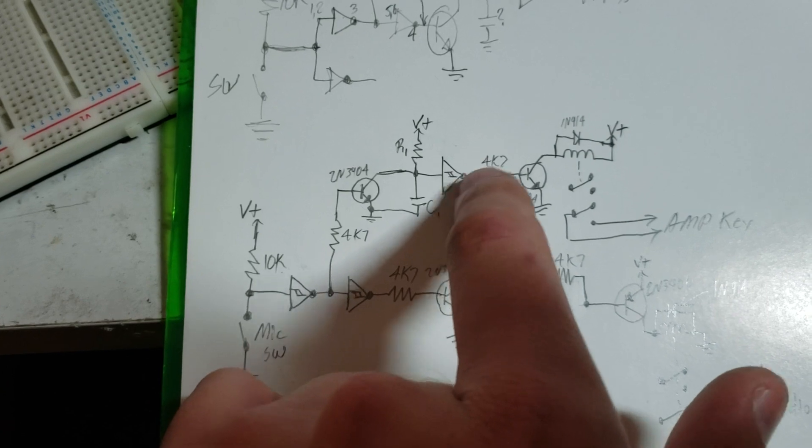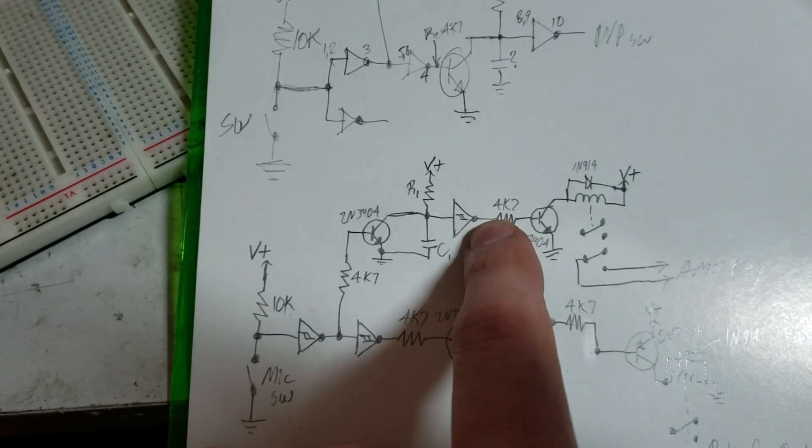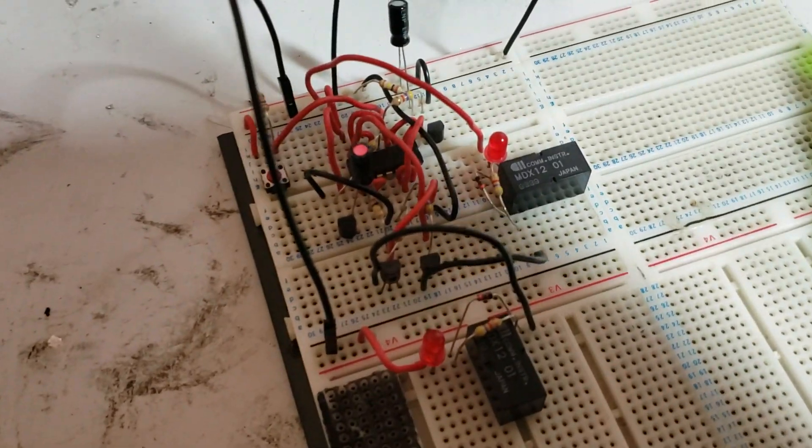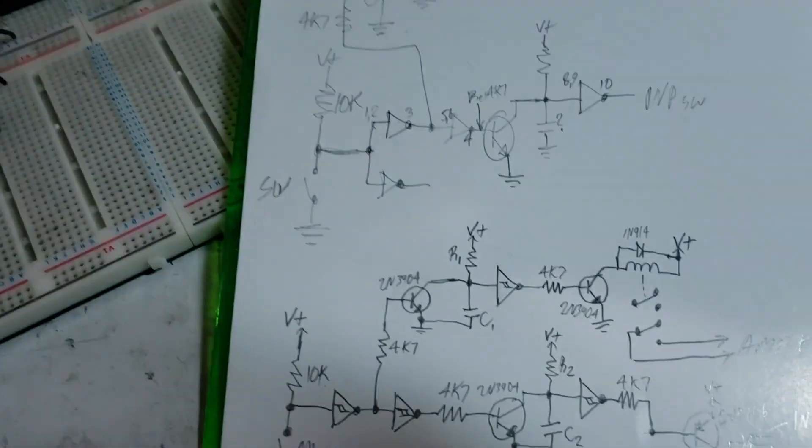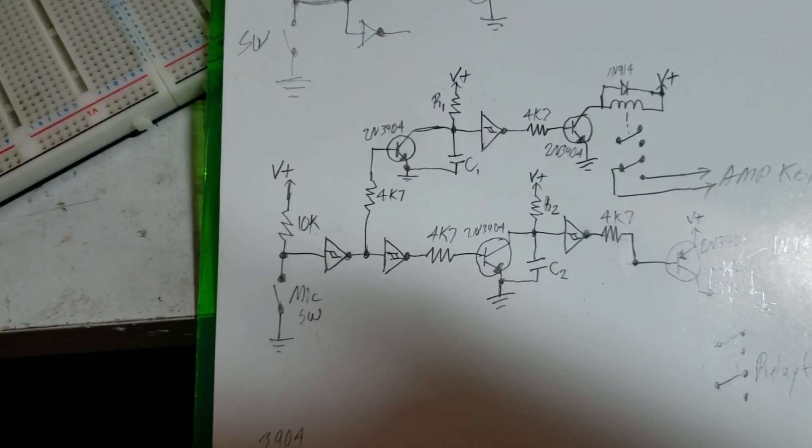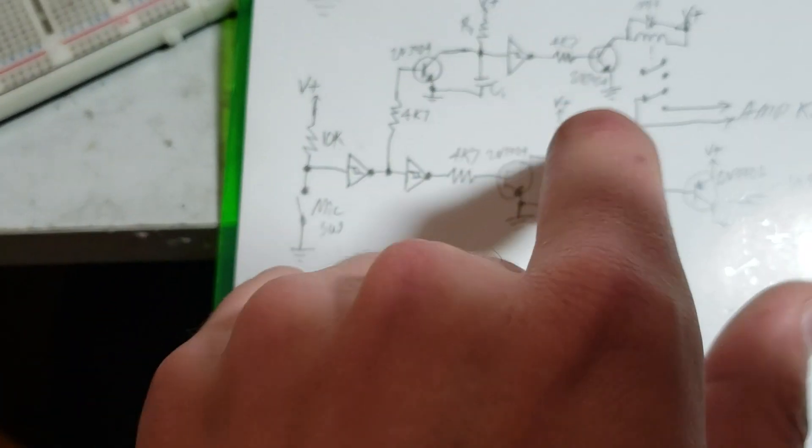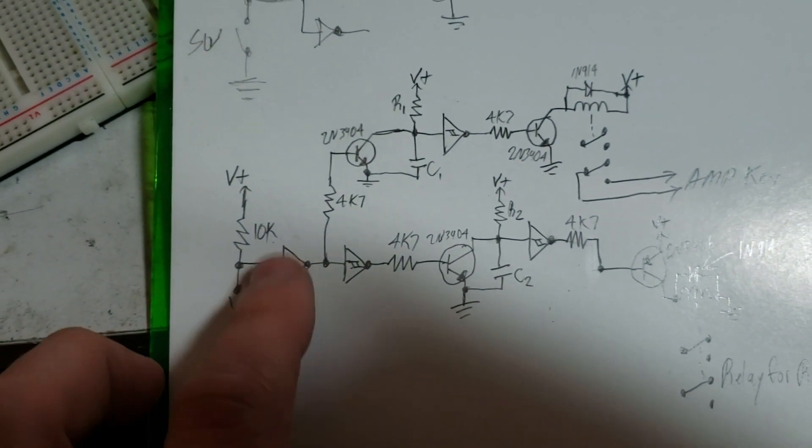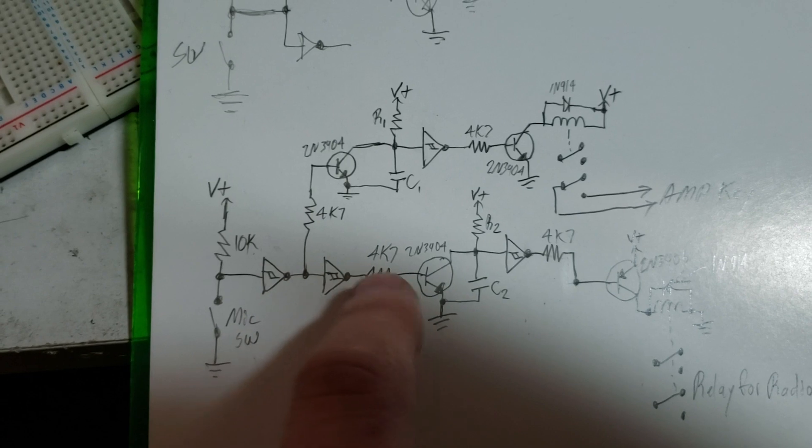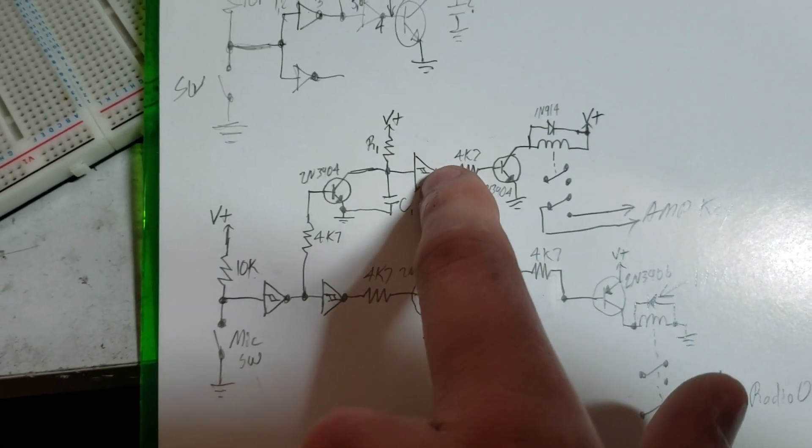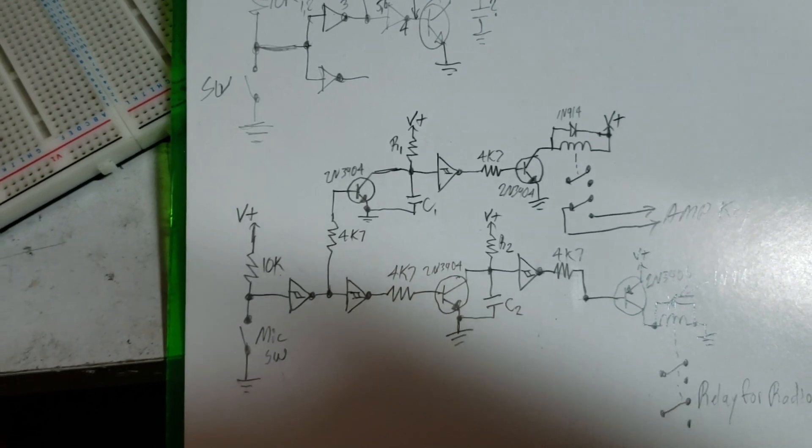These right here are inverted Schmidt trigger buffers. So on this circuit board over here, I've actually got NAND gates. So I think it's a 4093 CMOS 4093 chip, which is perfect because it has four, you can make four inverters out of it, which is what I've done here. And they have the Schmidt trigger input. So the Schmidt trigger input is important for this. This will not work without using an IC that has Schmidt triggers on it.